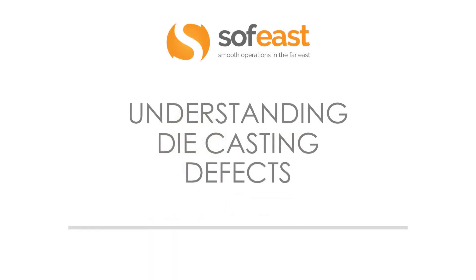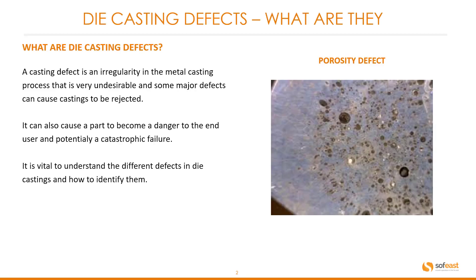Welcome to another video in this series of die casting. Here we're going to be understanding the die casting defects. A casting defect is an irregularity in the metal casting process that is very undesirable, and some major defects can cause castings to be rejected. It can also cause a part to become a danger to the end user and potentially a catastrophic failure. It is vital to understand the different defects in die castings and how to identify them.